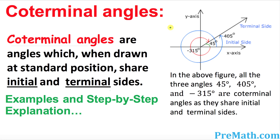In this video tutorial, I will be going over coterminal angles problems in a step-by-step approach. Coterminal angles are angles which share the same initial and terminal sides. On the right-hand side example, you can see we have three angles: 45 degrees, negative 315 degrees, and 405 degrees. Both start off from the x-axis, which is their initial side, and they end up with the same terminal side. That's the reason we call all three of these coterminal angles.